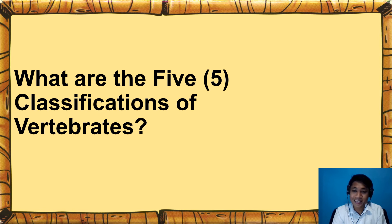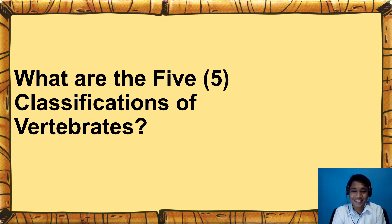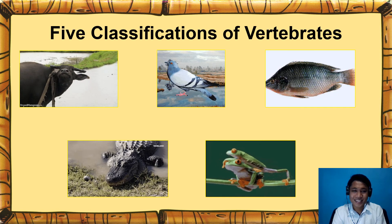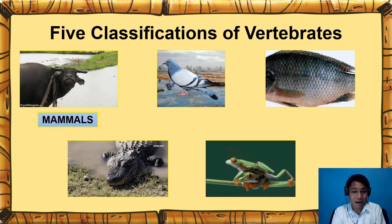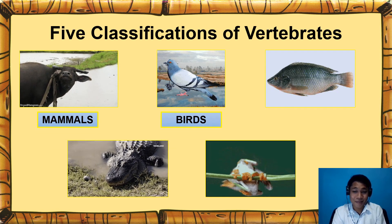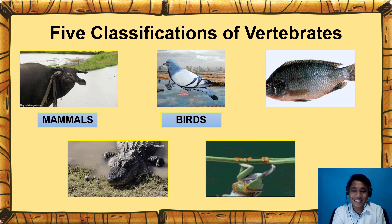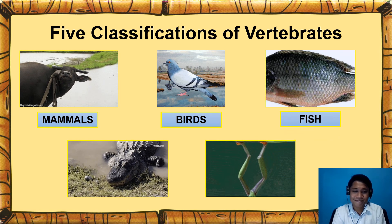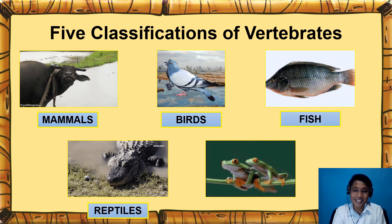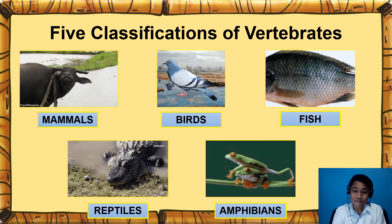Do you still remember the five classifications of vertebrates? Can you enumerate them? Very good. We have the mammals, birds, fish, reptiles, and amphibians.